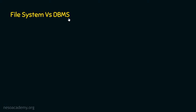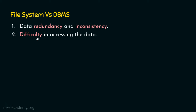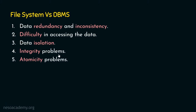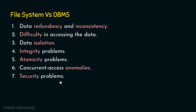We are going to compare file system and database management system across seven points. Point one: data redundancy and inconsistency. Point two: difficulty in accessing the data. Point three: data isolation. Point four: integrity problems. Point five: atomicity problems. Point six: concurrent access anomalies. And point seven: security problems. These seven problems exist in file systems and that's why file systems are not suitable for organizations for efficient storing and retrieving.